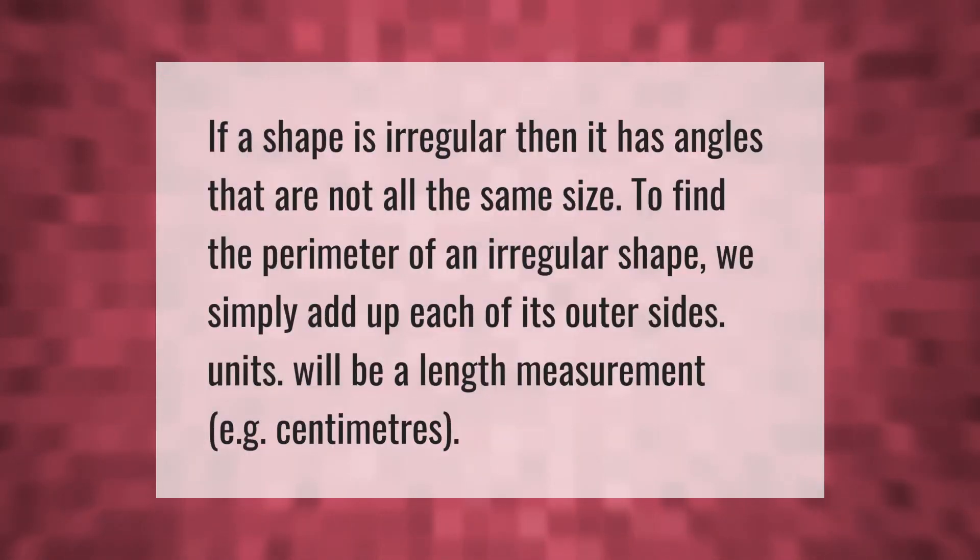If a shape is irregular, then it has angles that are not all the same size. To find the perimeter of an irregular shape, we simply add up each of its outer sides.